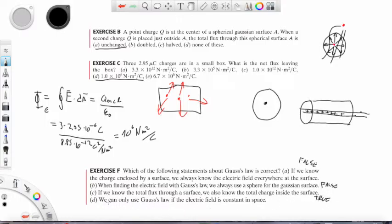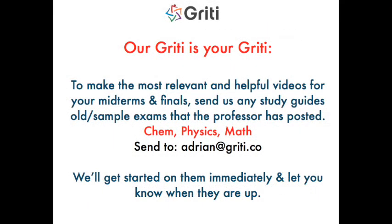And D. We can only use Gauss's law if the electric field is constant in space. It doesn't have to be constant. So it can be, for example, varying as a function of time. It doesn't really matter. In that sense, Gauss's law is the universal law for calculating the electric field produced by some charge distribution. Thank you very much.